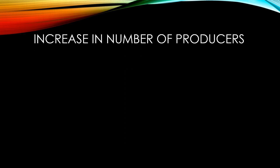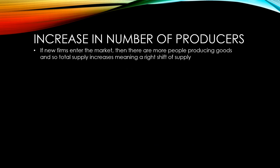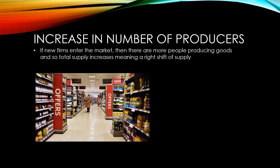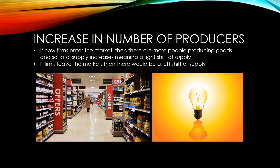If new firms enter the market, then there are more people producing goods, and so total supply increases, meaning a right shift of supply. An example of this is when Aldi and Lidl became a part of the UK supermarket industry. If firms leave the market, then there would be a left shift of supply. Recently, high production costs for energy firms have caused a lot of smaller firms to leave the UK market.